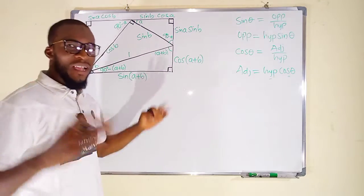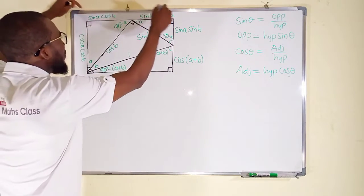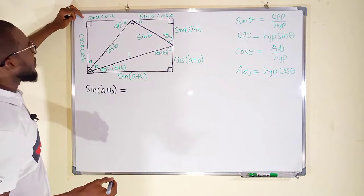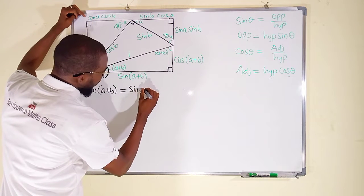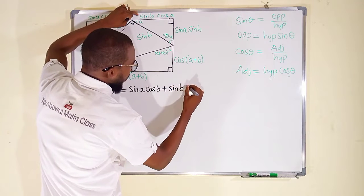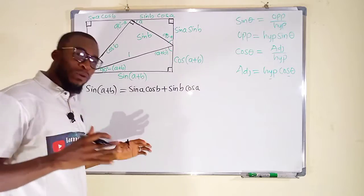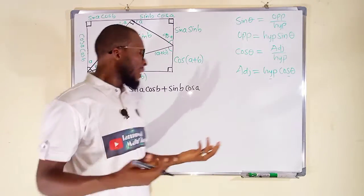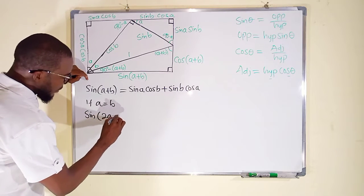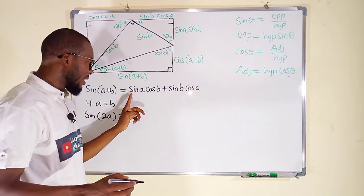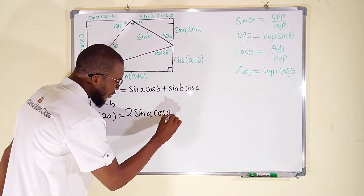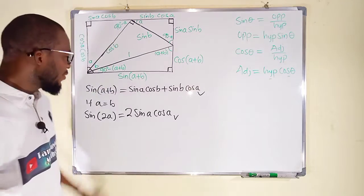Remember, in a rectangle all opposite sides are equal. This means that sin of A plus B will be the sum of the other corresponding sides. So we get: sin(A + B) = sin A cos B + sin B cos A. To obtain the double angle formula, we let A equal B, so sin 2A = sin A cos A + sin A cos A, which gives us 2 sin A cos A.